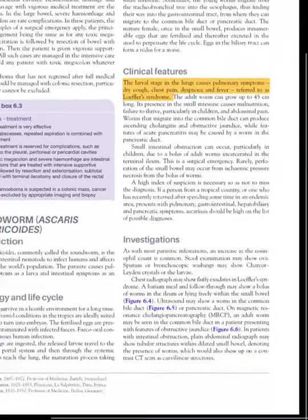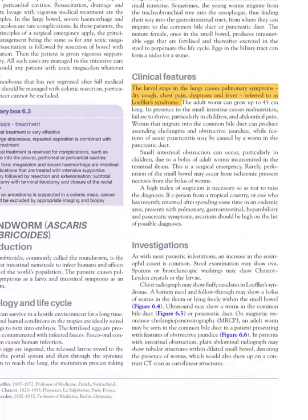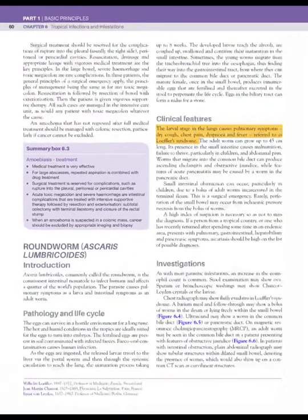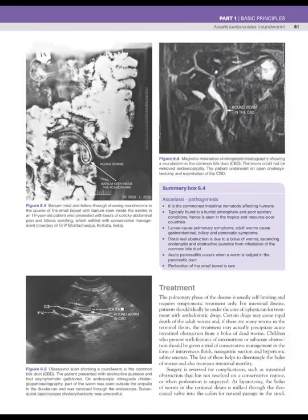Investigations for roundworm include raised eosinophils, stool examination for ova or parasites, and sputum or bronchoscopic washing for Charcot-Leyden crystals or larvae. In Löffler syndrome, chest radiograph may show exudates. Worms can sometimes be seen on ultrasound in the bile or pancreatic duct. CT is helpful in obstruction cases, where a curvilinear shadow is seen.